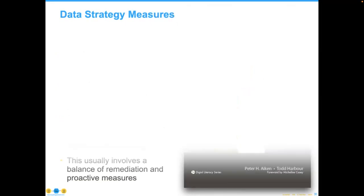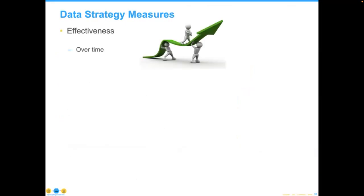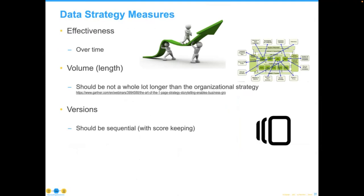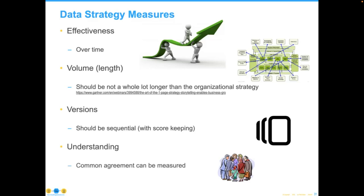This data strategy is going to involve some balance of remediative and proactive measures. One thing you can eventually measure is its effectiveness, but the time frame is longer than most people are used to — years is the typical measurement. The volume of the data strategy probably shouldn't exceed the organizational strategy. Most importantly, put versions in place: when you issue version two, nobody will say 'I thought we already had a data strategy' — instead they'll say 'yes, version two comes after version one.'